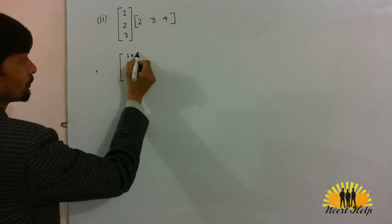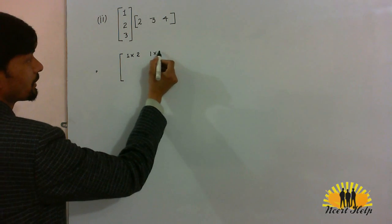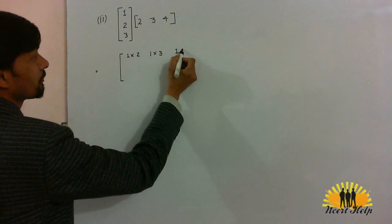1 into 2. Now, first row with second column, 1 into 3. Similarly, 1 into 4.